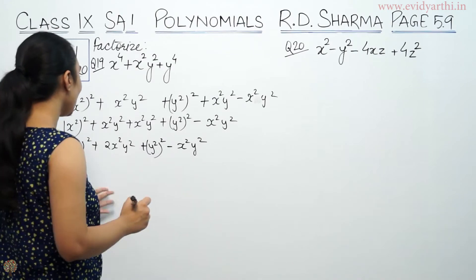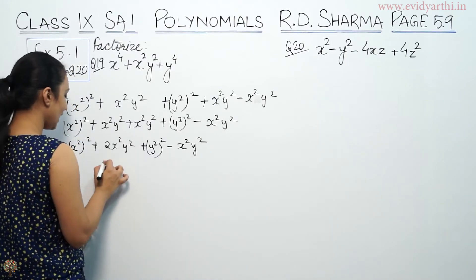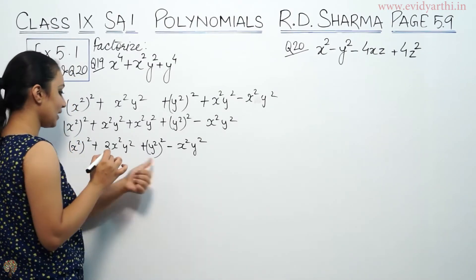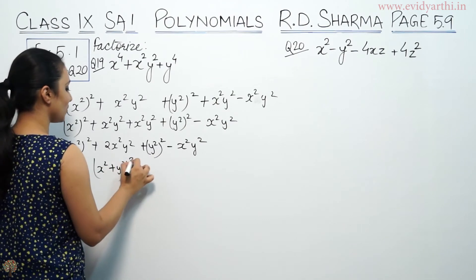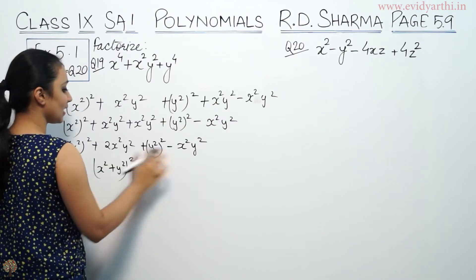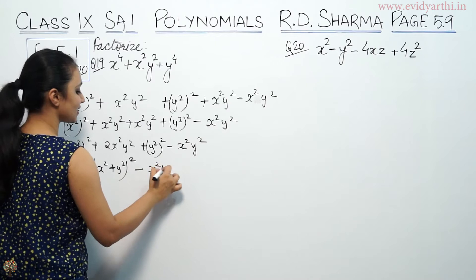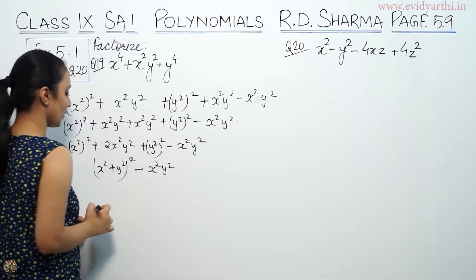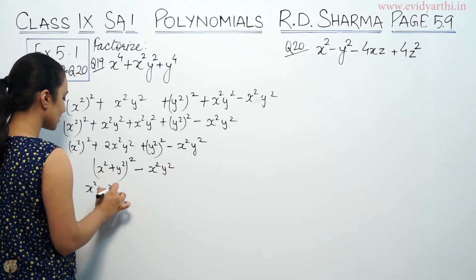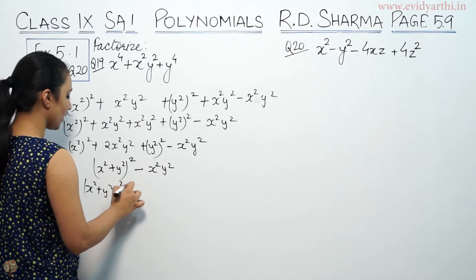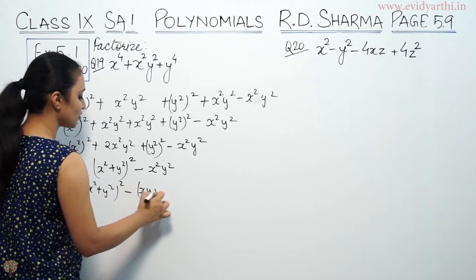We have our formula here: A plus B whole square. Here A is x², B is y². So this becomes A plus B whole square, which gives us x² plus y², whole square, minus x²y², which is xy whole square.